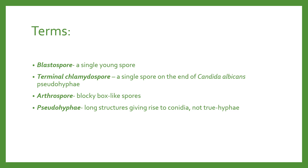A spore is also known as conidia. A blastospore is a single young spore, sometimes called blastoconidia. A terminal chlamydospore is a single spore on the end of Candida albicans pseudohyphae. Yeast don't make true hyphae — they make false hyphae known as pseudohyphae. An arthrospore is a blocky, box-like spore. And a pseudohyphae is a long structure giving rise to conidia, but they are not true hyphae.